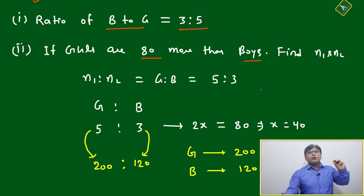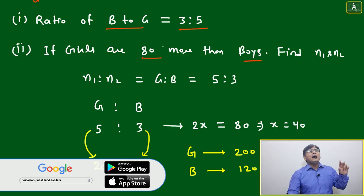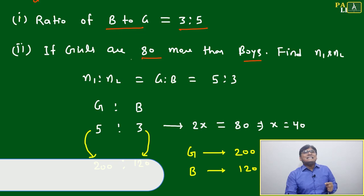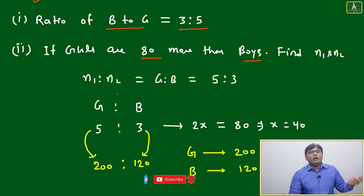Earlier, about n1 and n2, we don't have any idea what the number of boys or girls is. We only know the boy to girl ratio is 3 to 5, but not the exact numbers. Now one piece of information is given: if girls are 80 more than boys, find n1 and n2. This is not easy...